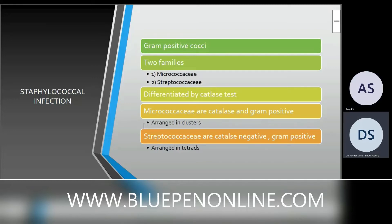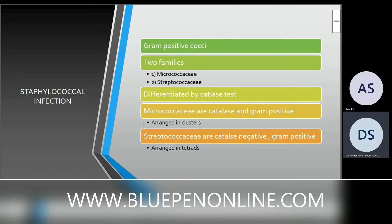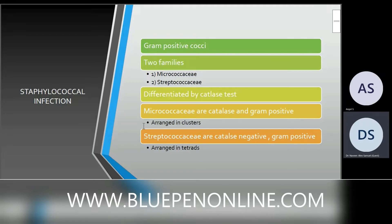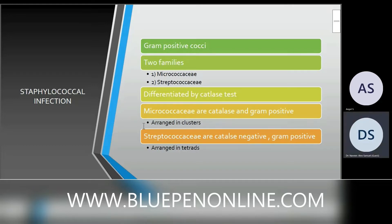Staphylococcus is under the family Micrococcaceae. This is a gram-positive coccus with two families: Micrococcaceae and Streptococcaceae. They are differentiated by the catalase test. Micrococcaceae are catalase positive and gram positive, arranged in clusters like grapes. Streptococcaceae are catalase negative and gram positive.